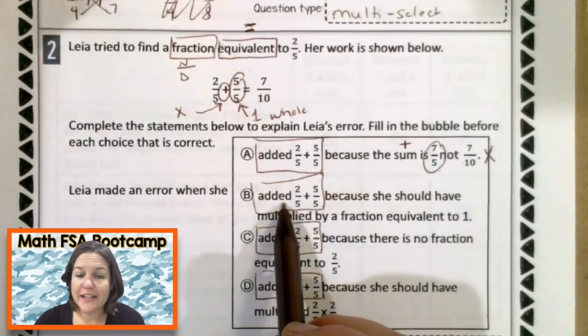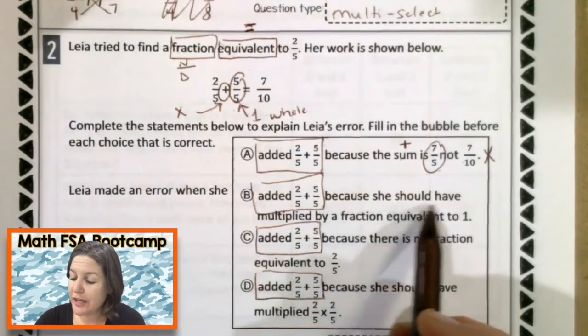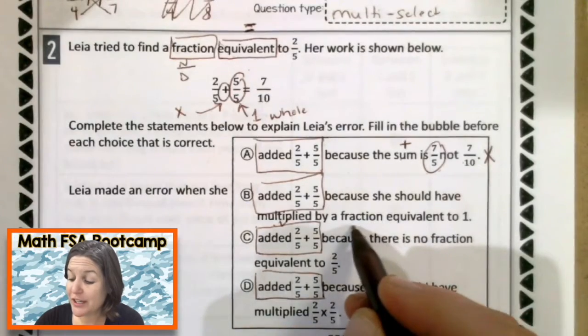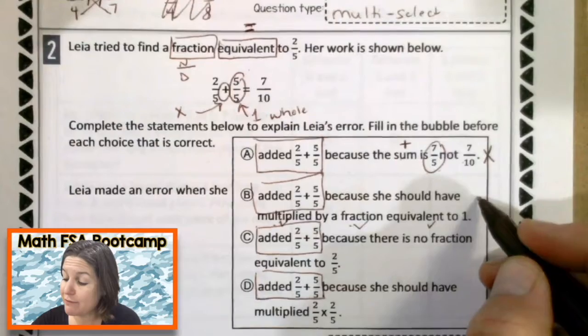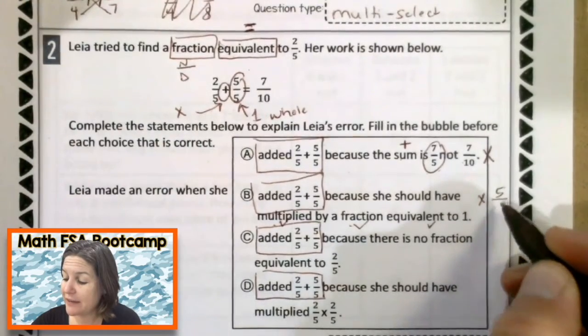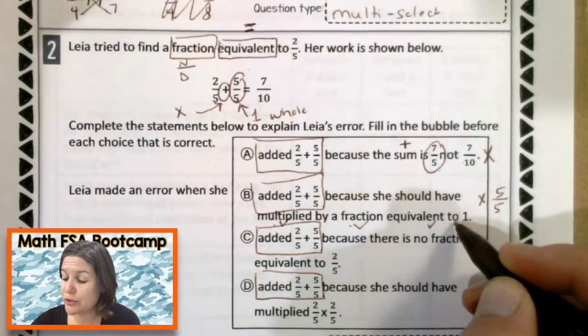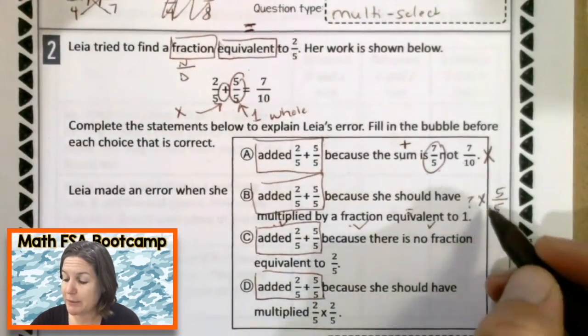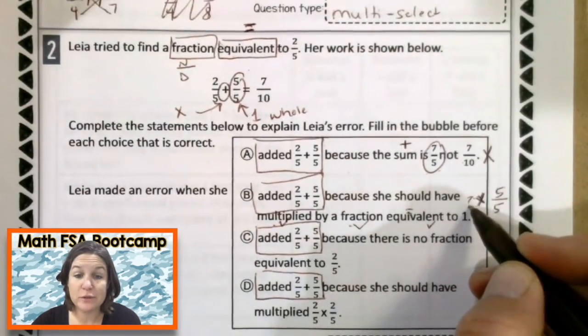Did she make an error when she added two-fifths plus five-fifths? Because she should have multiplied, yeah, by a fraction, yeah, equivalent to one. Yeah, she should have multiplied by five-fifths, which is a fraction that is equivalent to one. So this right here looks like the great answer. I'm not trying to eliminate there. That was my multiplication sign. Sorry. I want to keep this one because this one looks good.